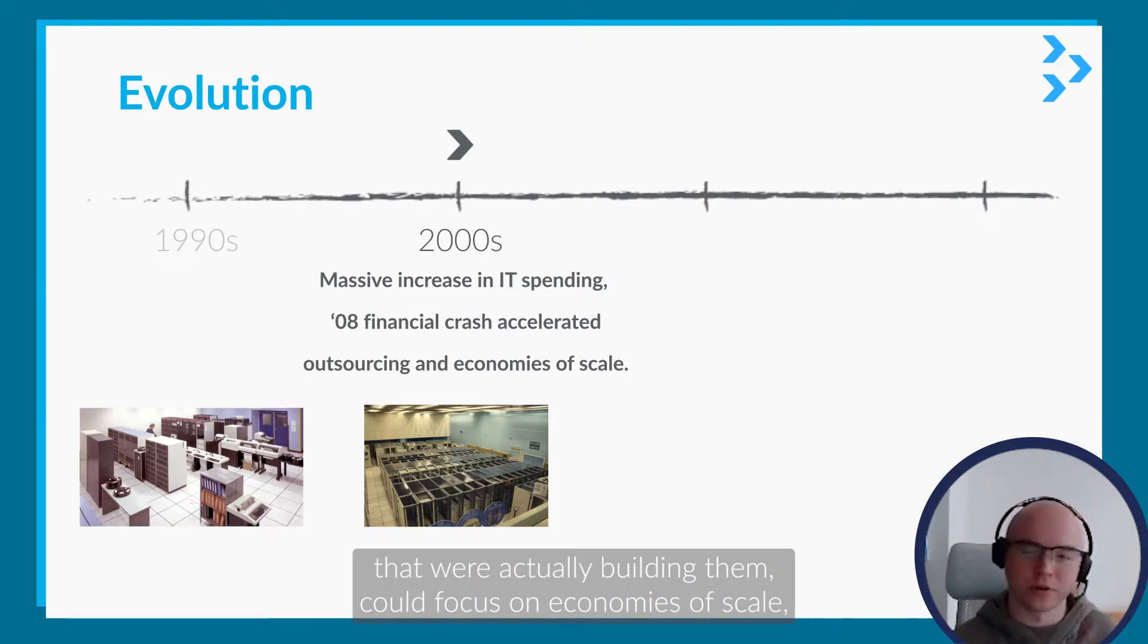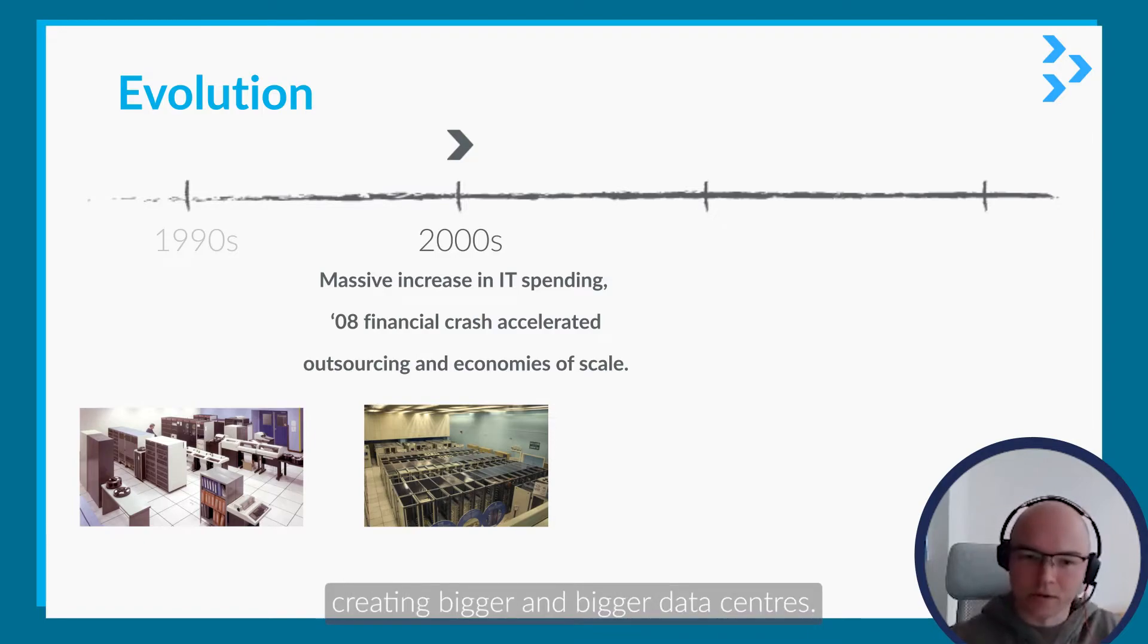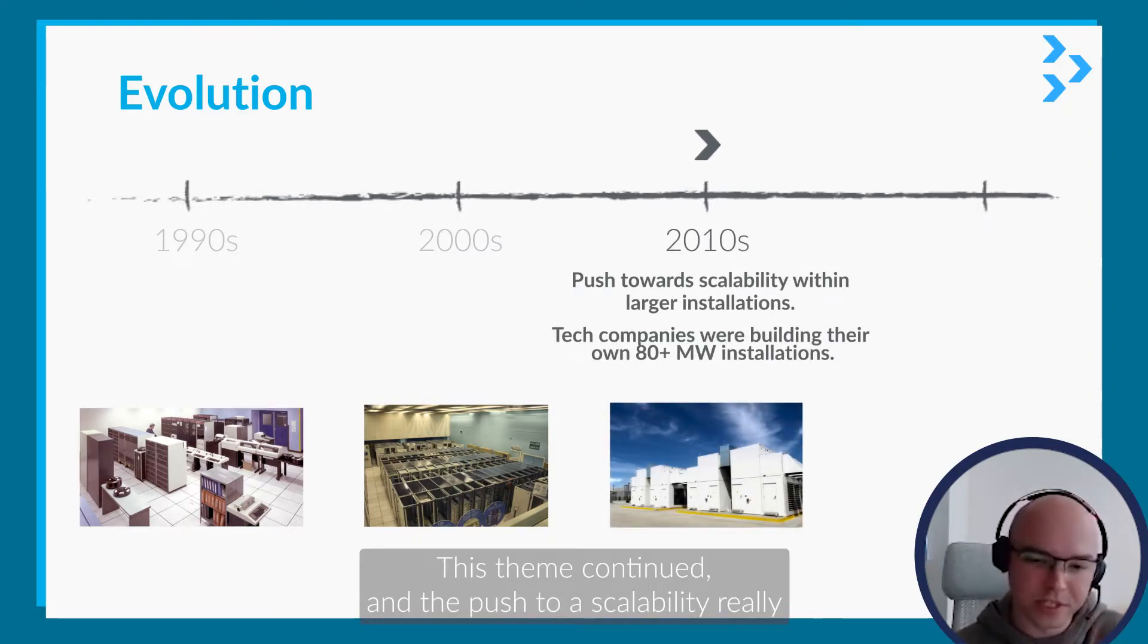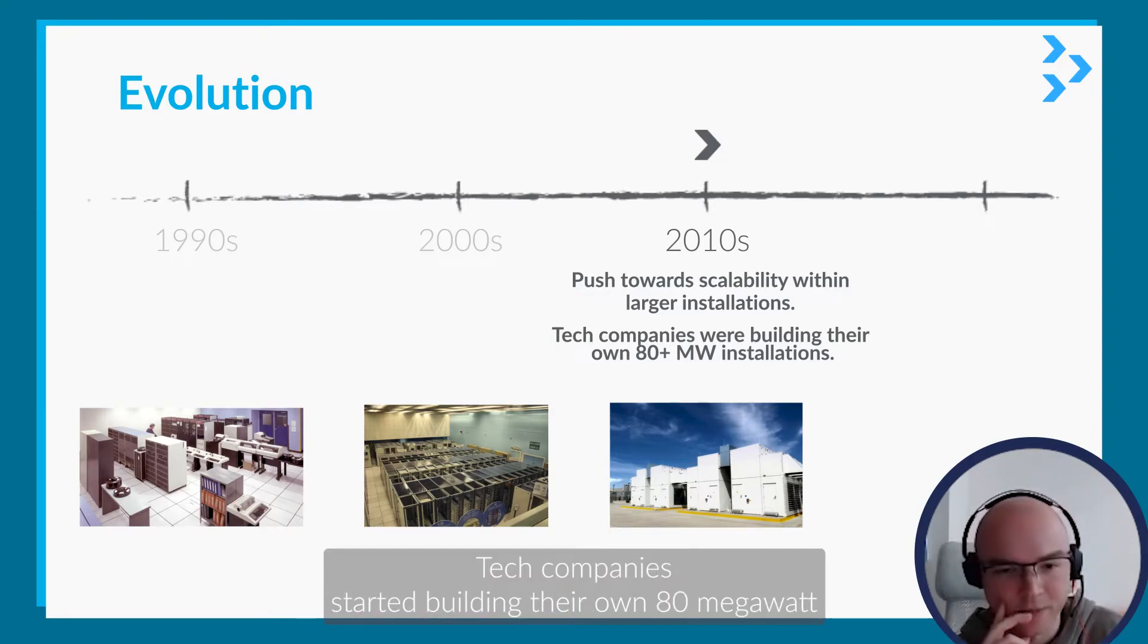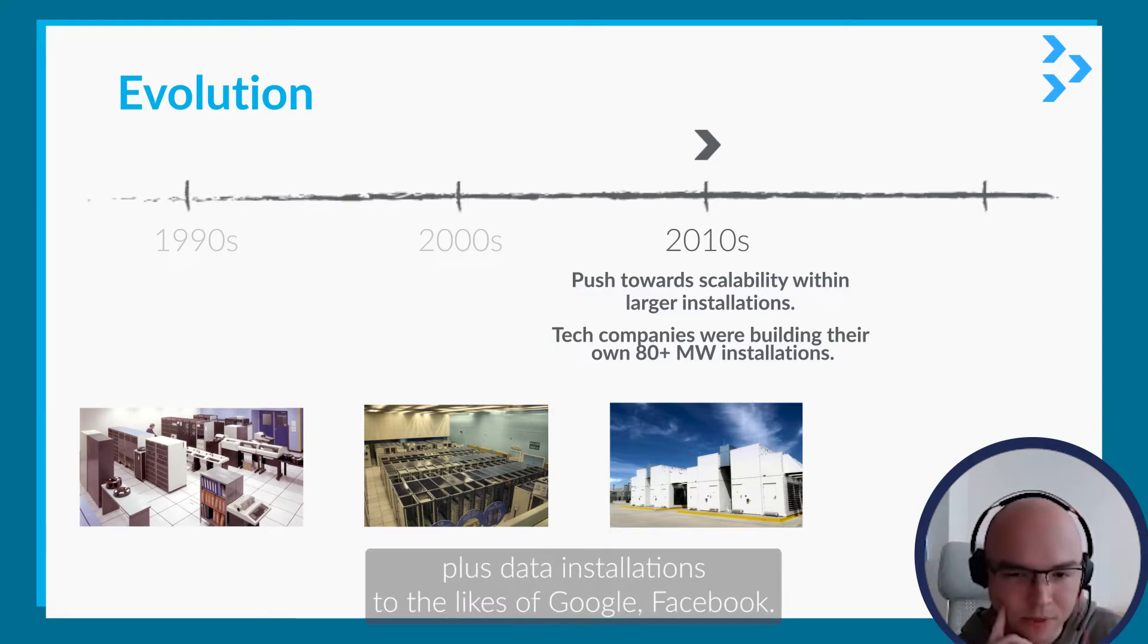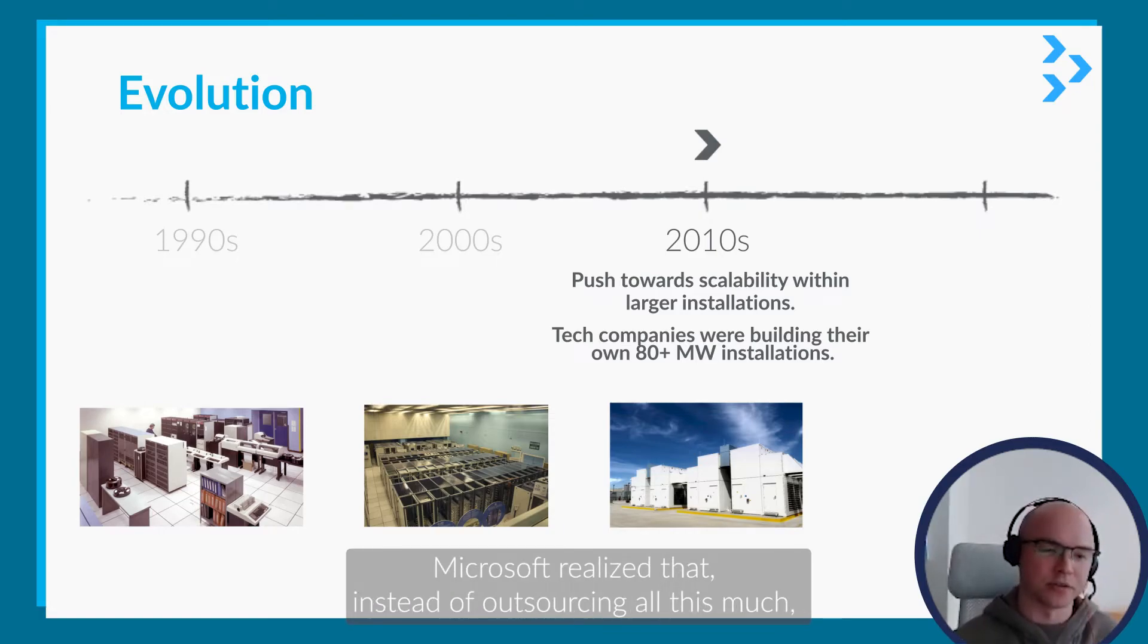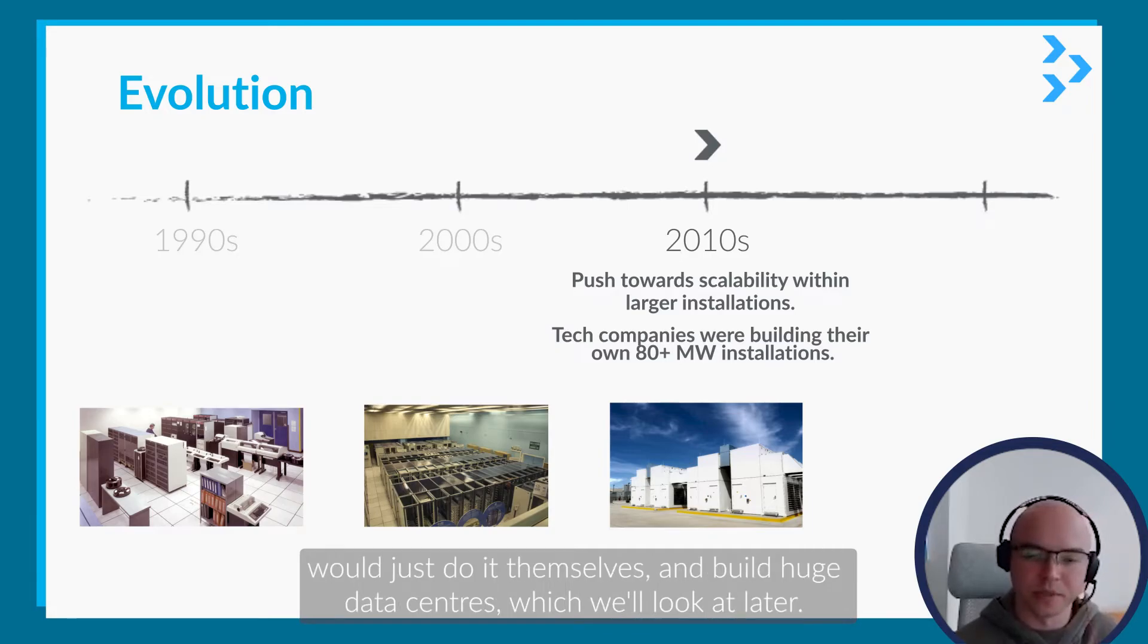In 2010, this theme continued and the push towards scalability really picked up the pace to where we are today. Tech companies started building their own 18 megawatt plus data installations. The likes of Google, Facebook, and Microsoft realized that instead of outsourcing all this, they might as well just do it themselves and build huge data centers, which we'll look at later.